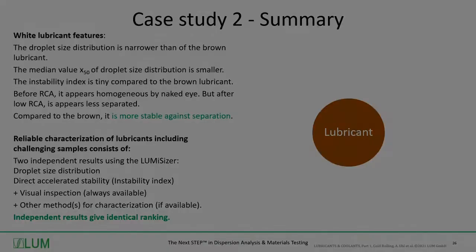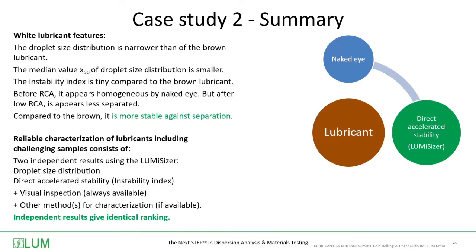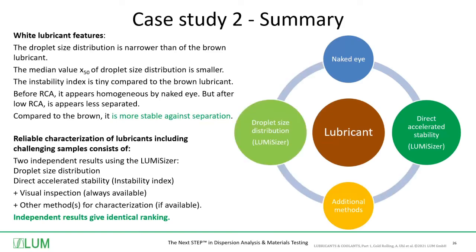The reliable characterization of lubricants, including challenging samples, consists of: the lubricant itself, always available naked eye observation, direct accelerated stability testing in the LumiSizer, sometimes additional methods, and the LumiSizer's ability to determine the droplet size distribution. Different views onto the same lubricant help us to understand and characterize even challenging samples.